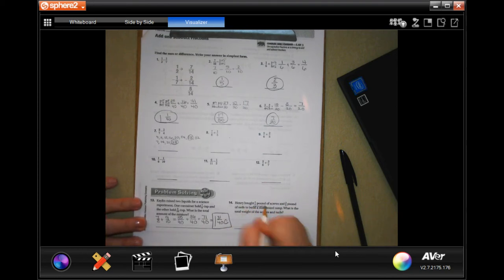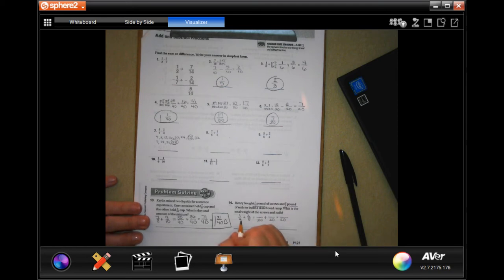Henry bought a quarter of a pound of screws and two-fifths of a pound of nails to build a skateboard ramp. What is the total weight of screws and nails? One-quarter plus two-fifths. Smallest number they're both going to go into is going to be twenty. Four times five is twenty, so one times five is five. Five times four is twenty, two times four is eight. Five plus eight is thirteen. Thirteen is a prime number. Thirteen over twenty pounds. Again, not a pretty number, but still correct.